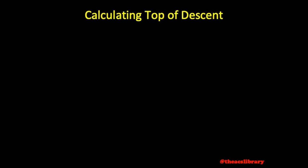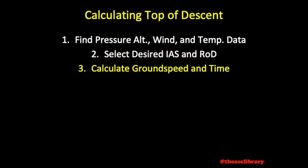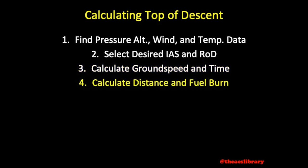To reiterate: for top of descent, the first step is always to find pressure altitude, wind, and temperature data. We can select an indicated airspeed and rate of descent, find our ground speed based on predetermined indicated airspeed, and our expected time and route based on predetermined rate of descent. Based on ground speed and time, we find distance and fuel burn.